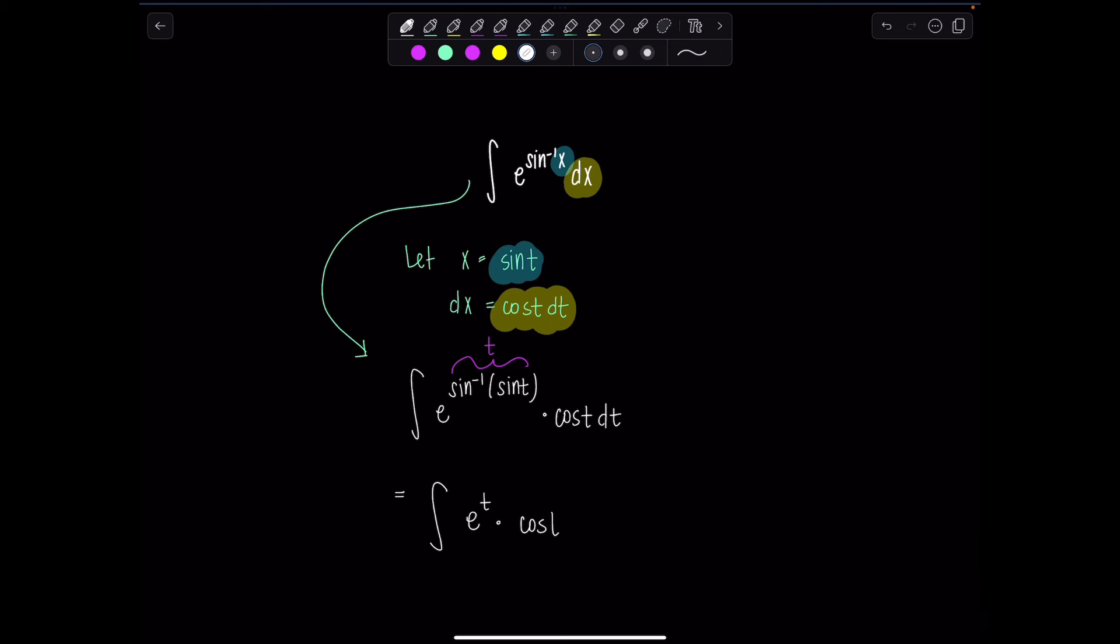Now, as long as sine of t is within the domain of sine inverse, then this composition is well defined. And I can just rewrite everything as e to the t times cosine of t dt.